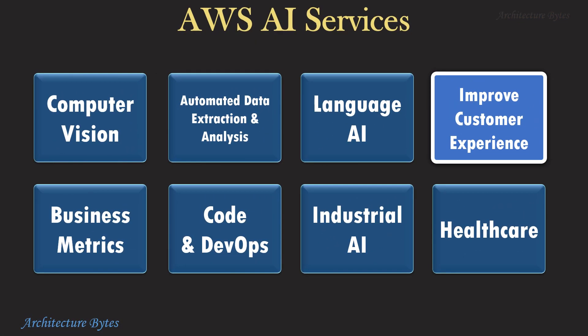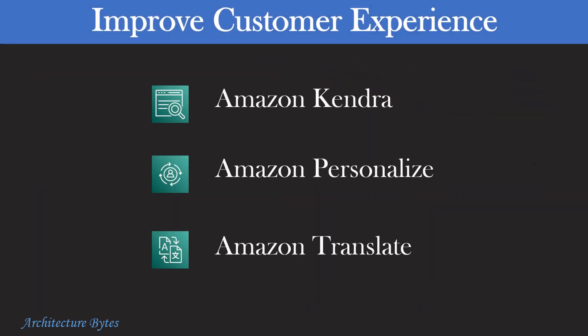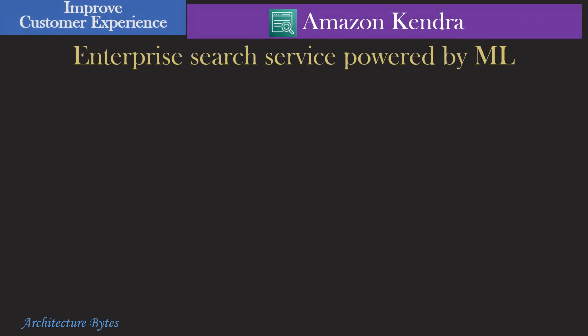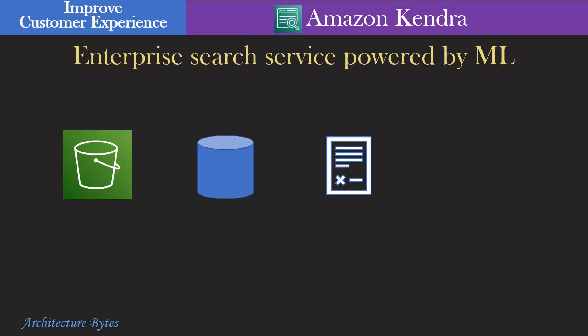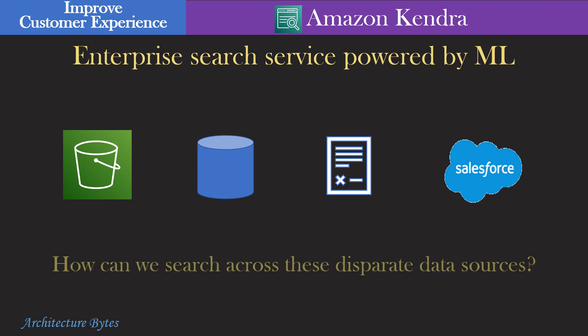Let's look at AI services under the improved customer experience category. Here we have Amazon Kendra, Personalize, and Translate. An enterprise would have content spread across file systems, databases, document repositories, and so on. It's hard to search across these disparate sources via a unified interface.